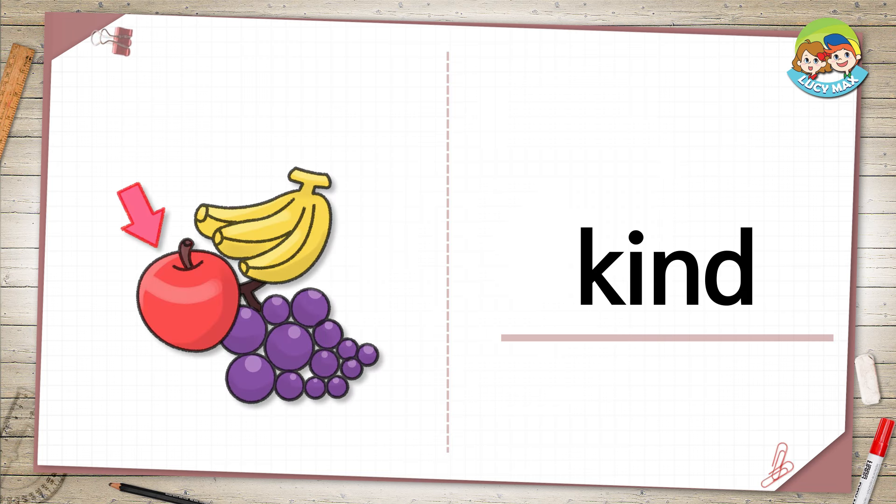Kind. There are different fruits in the picture. An apple is a kind of fruit. We say something is a kind of thing when it belongs to a large group of things. The apple is part of a large group of fruits.